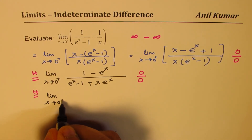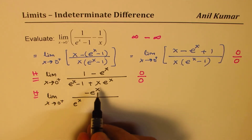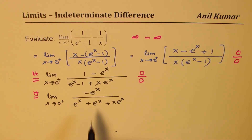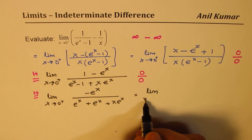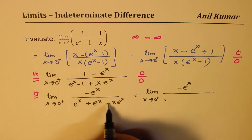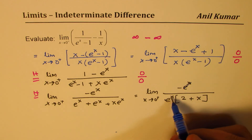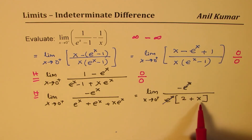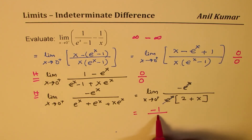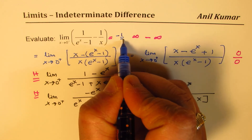Applying L'Hopital's rule a second time: the derivative of the numerator is minus e^x. For the denominator, we get e^x from the first term, and applying the product rule again gives e^x plus x times e^x, which factors as e^x times (2 plus x). We can cancel e^x from numerator and denominator, leaving minus 1 over (2 plus x). Substituting 0 gives minus 1 over 2, so the answer is minus one-half.